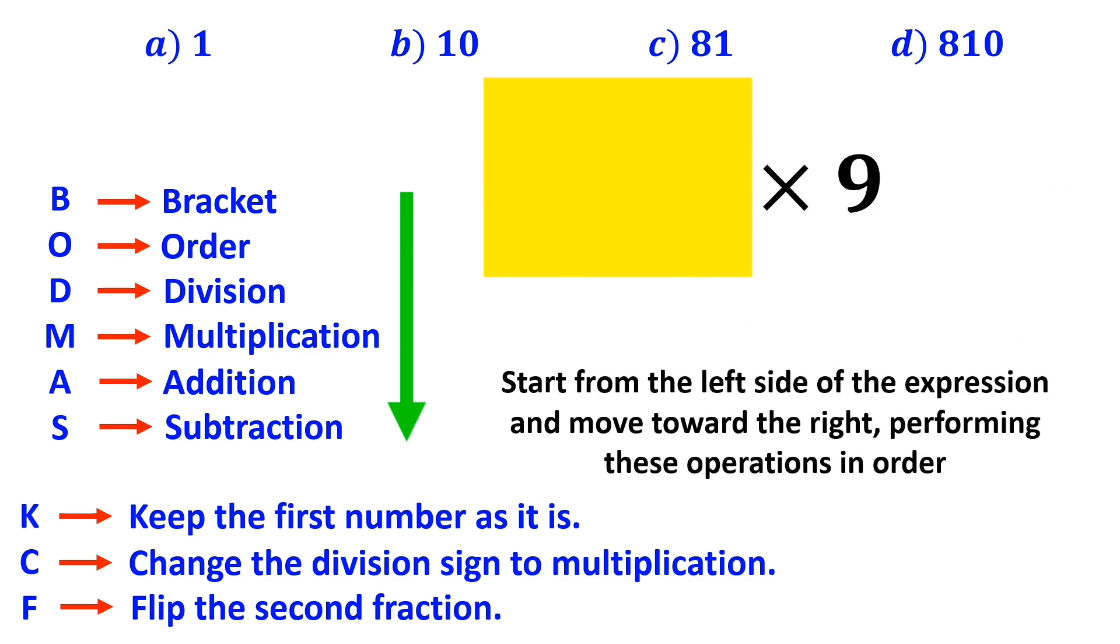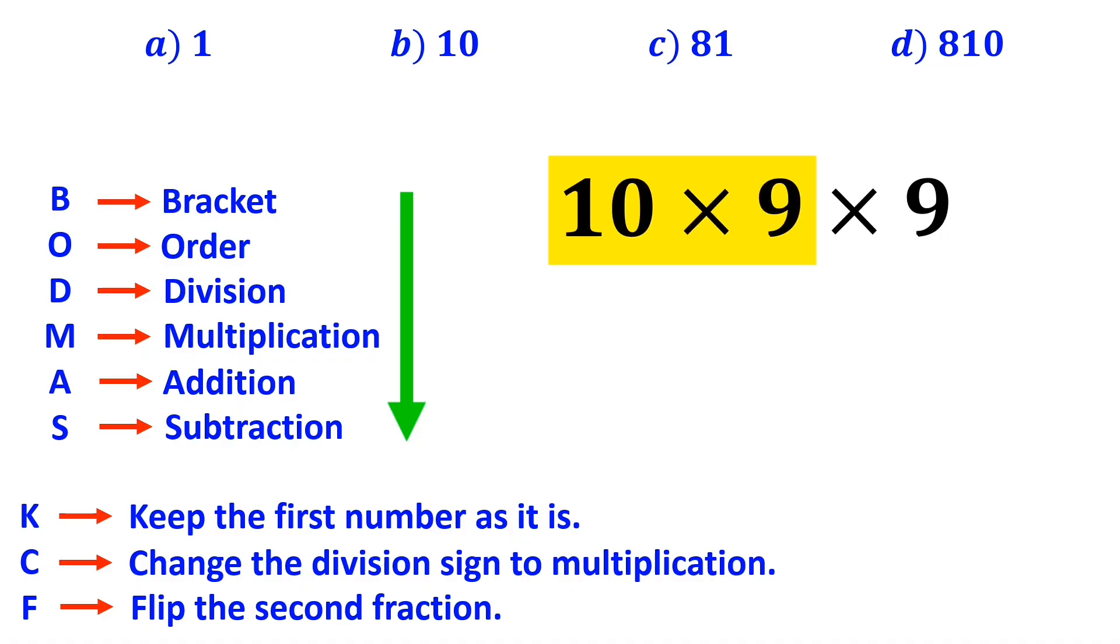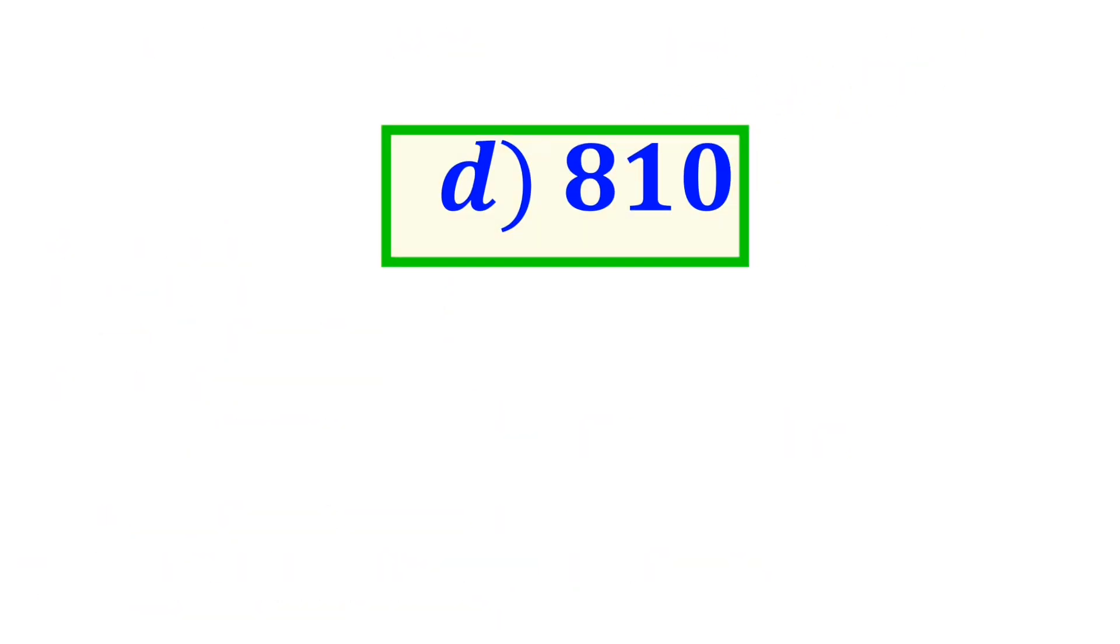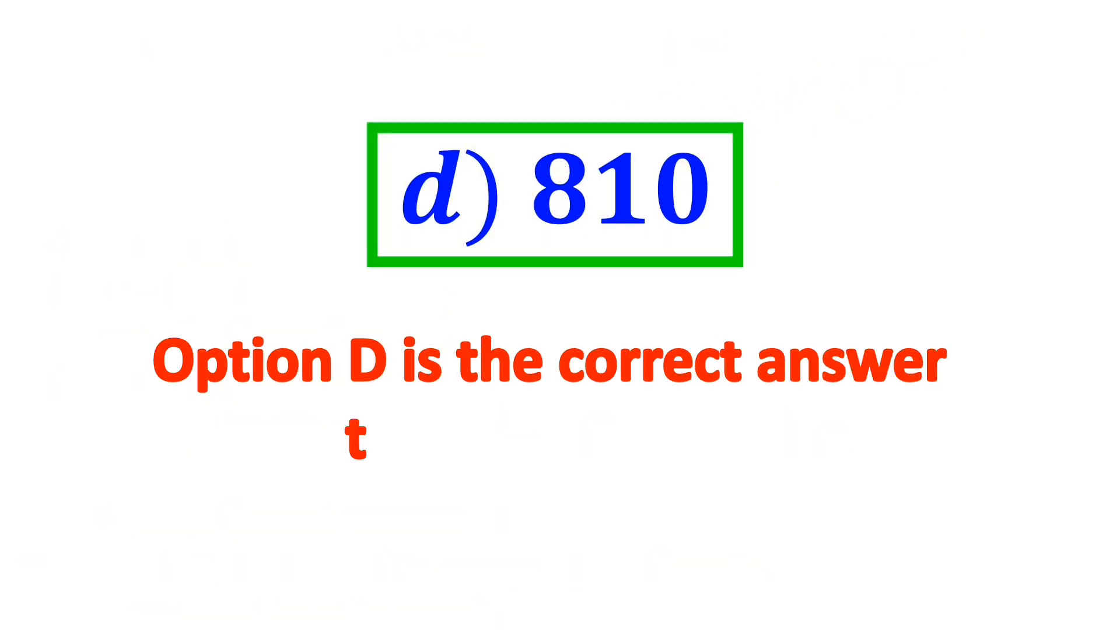So, we remove the highlighted part and replace it with 10 times 9, which simplifies the expression to 90 multiplied by 9. And finally, we get the answer 810. Therefore, option D is the correct answer to this question.